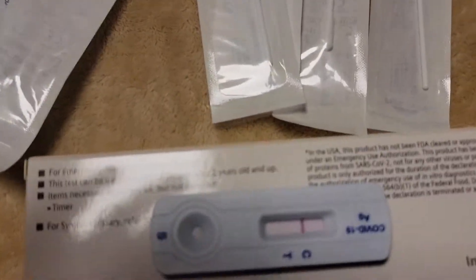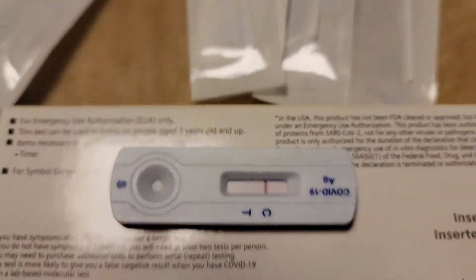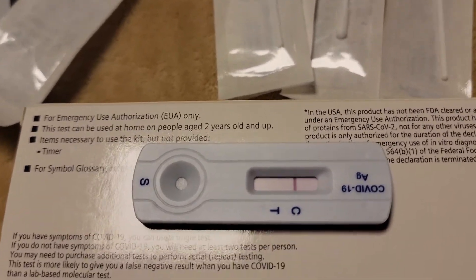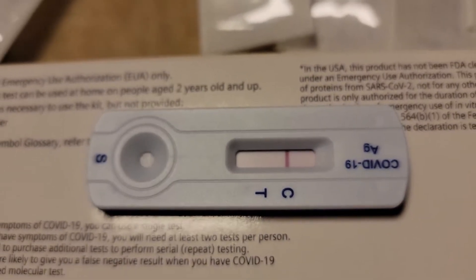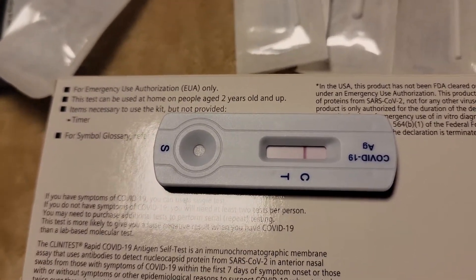All right, there you go. 8:13. We'll go check out our test. So C. It says to look carefully for the T, if there's another line there, even a very, very faint one, then you're positive. If it's C, it's a negative. So that's good.